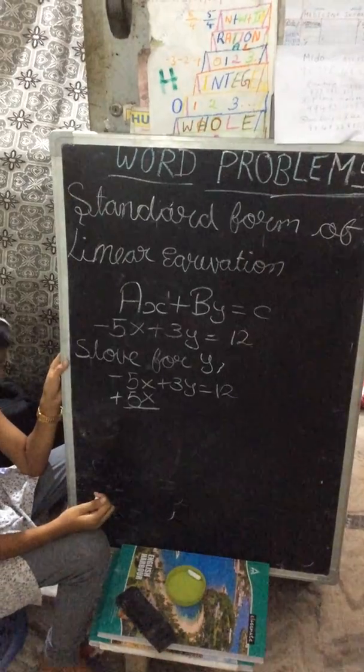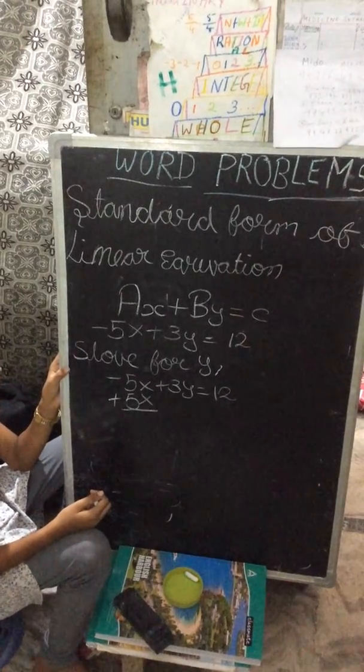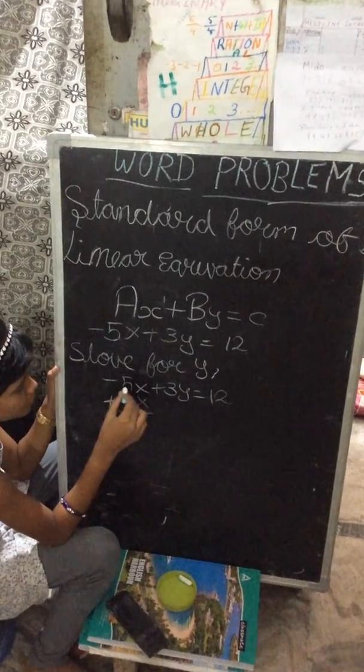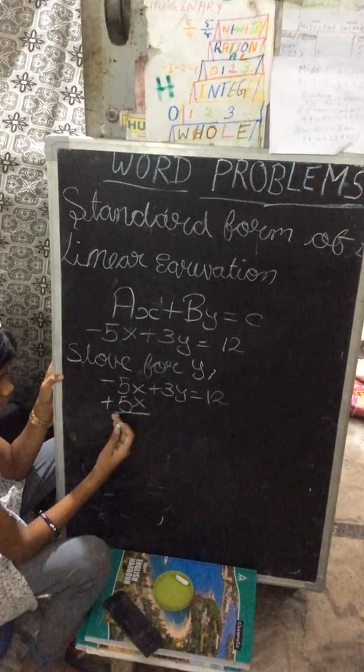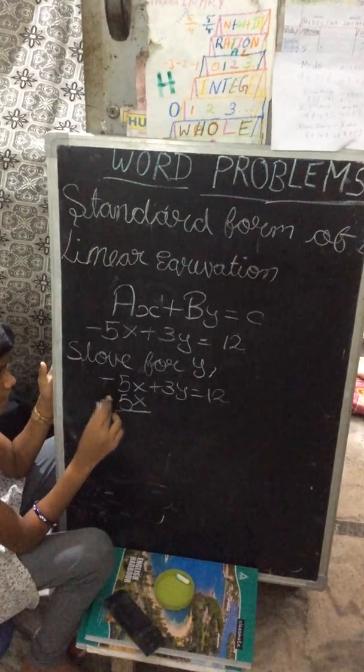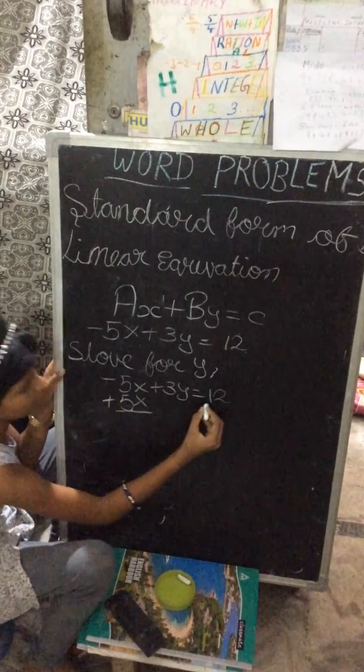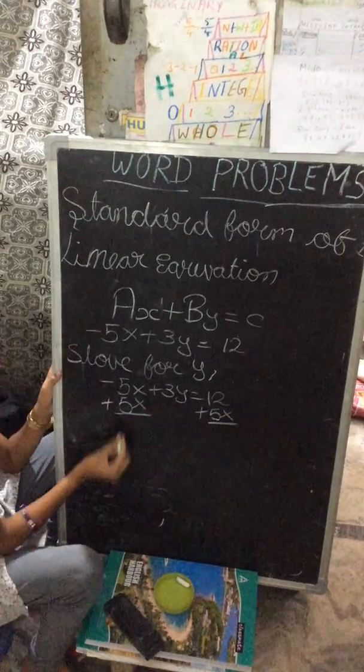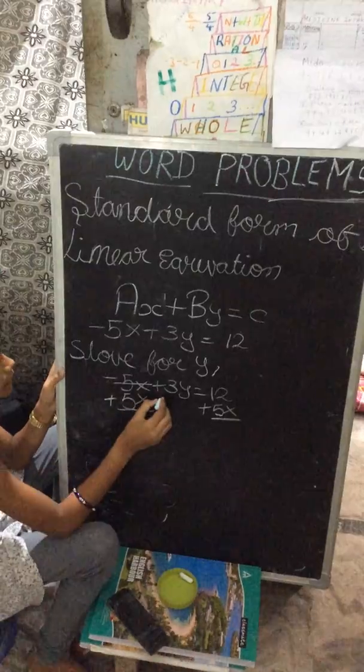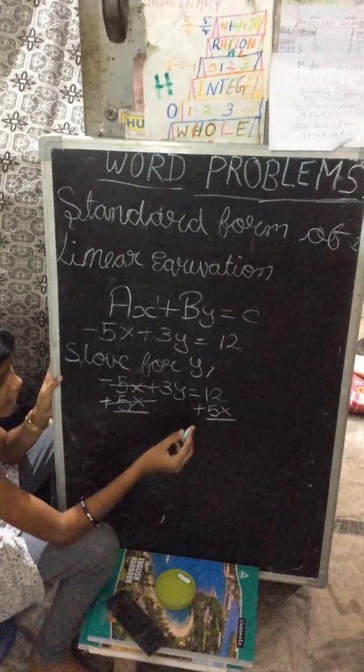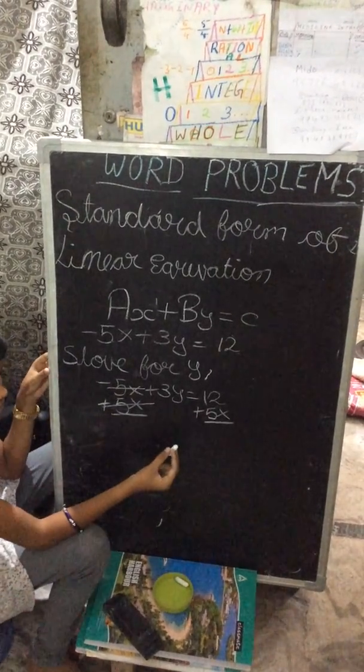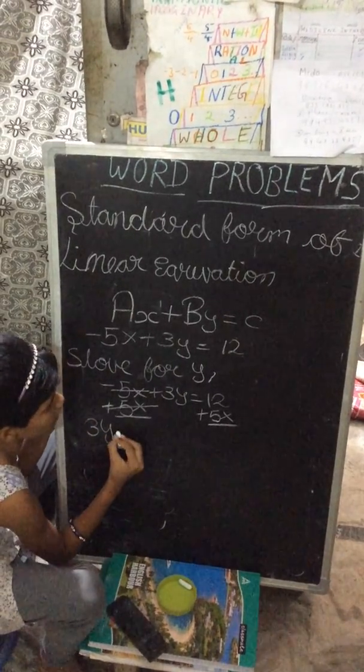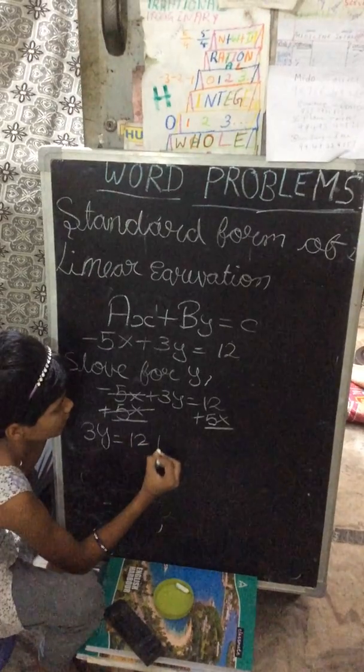Add, subtract, multiply, or divide - do what you want, just do it on both sides. Since we did plus 5x on the left side, the same thing we should do on the right side. Plus 5x. Here -5x plus 5x gets cancelled. Since these two are unlike terms, we leave them as it is and write 3y equals 12 plus 5x.